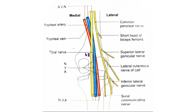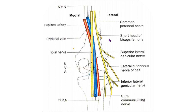Now let us look at the contents of the popliteal fossa. The major contents are arteries, veins, nerves, fat and lymph nodes. There is the popliteal artery in red along with its branches, the popliteal vein in blue, the tibial nerve, the common peroneal nerve, the posterior cutaneous nerve of the thigh, the genicular branch of the obturator nerve, the popliteal lymph nodes and fat.